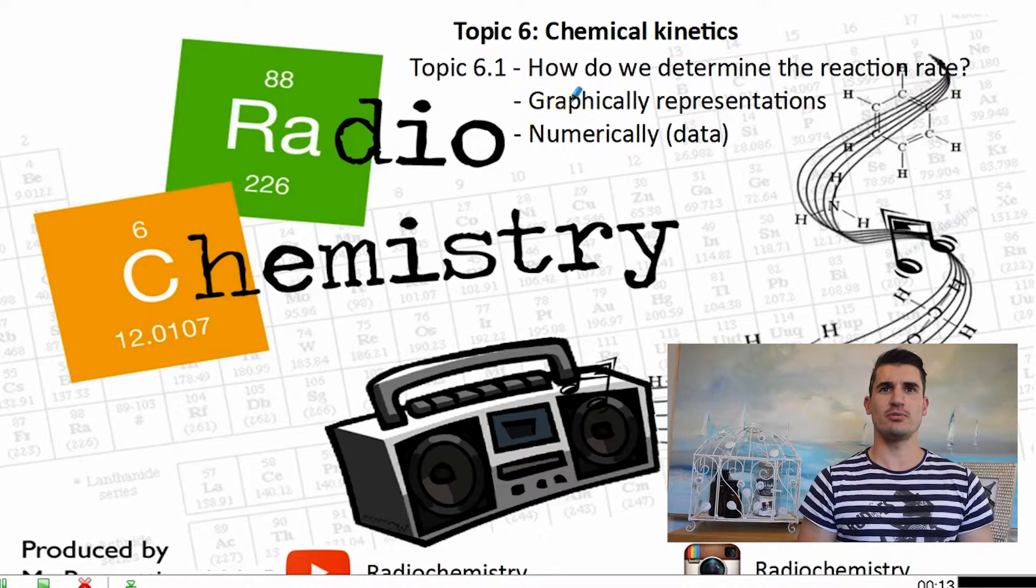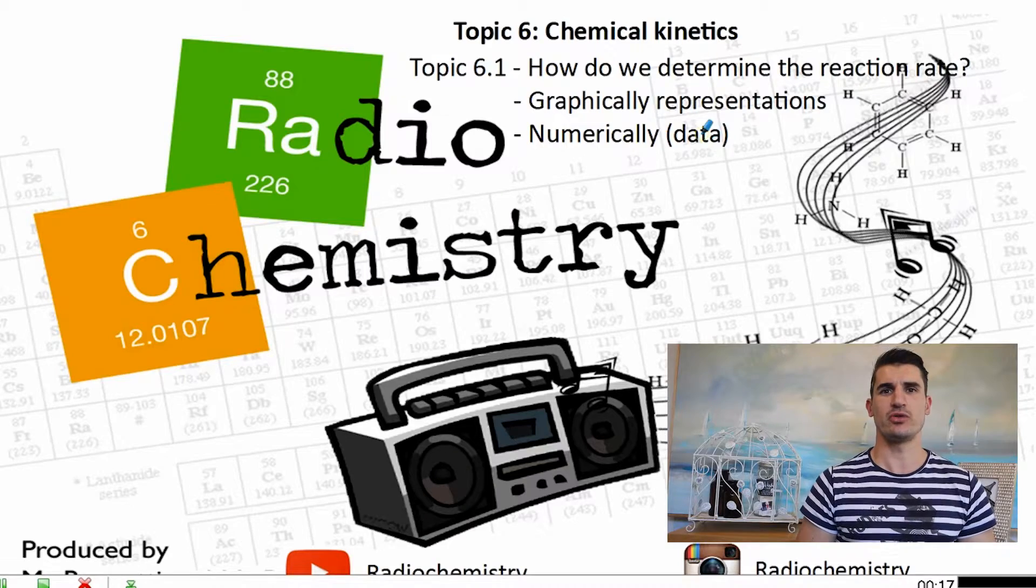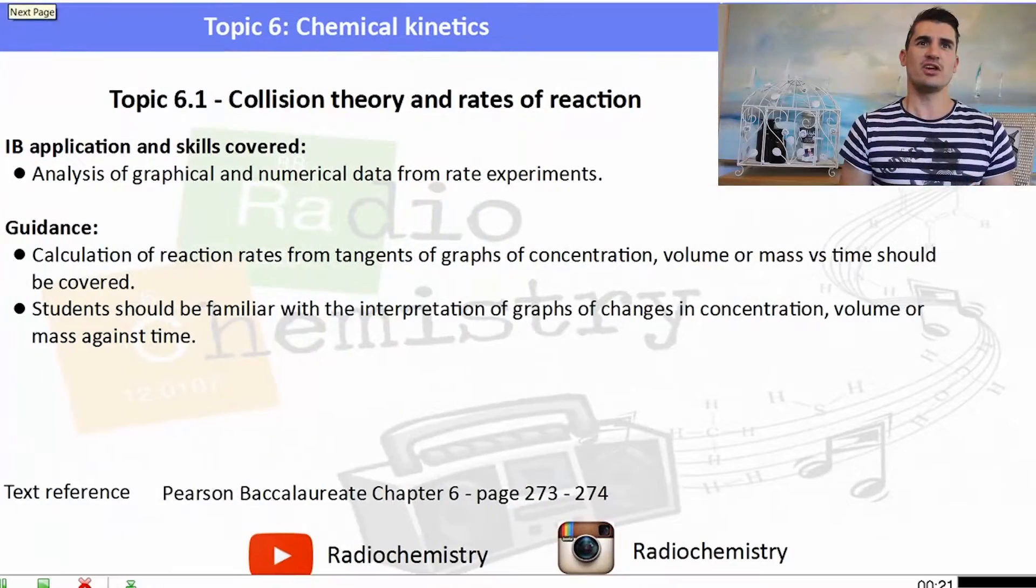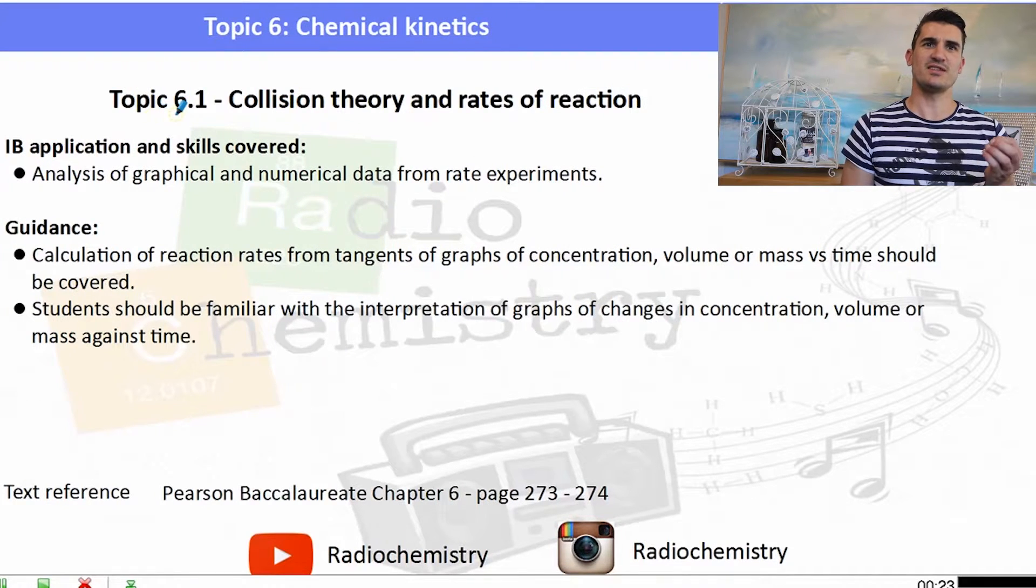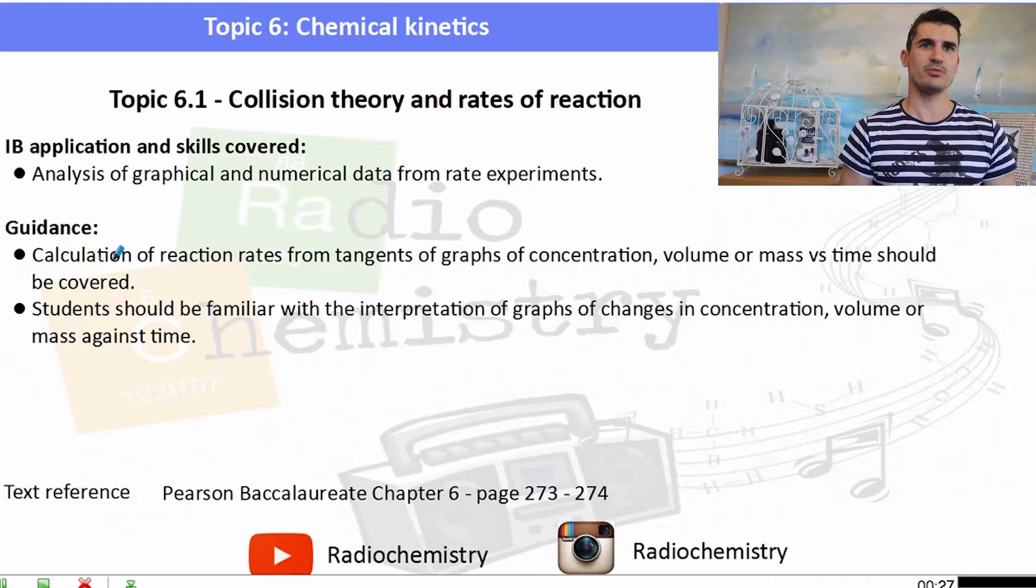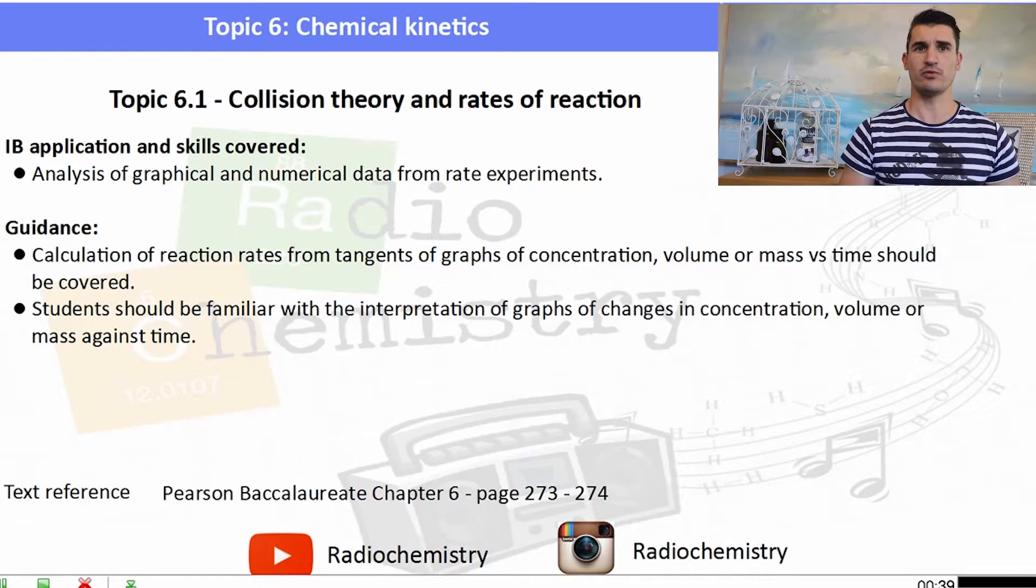Topic 6.1, how do we determine the reaction rate? We look at how do we do that graphically and how do we do that numerically. The IB applications and skills is we need to analyze graphical and numerical data from rate experiments. We need to calculate reaction rates using tangents, and then students need to be familiar with interpreting the graphs of concentration versus time and mass versus time or volume versus time.